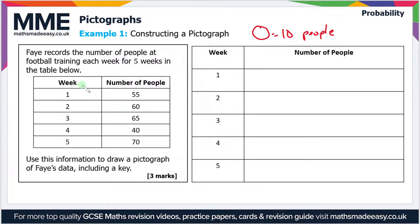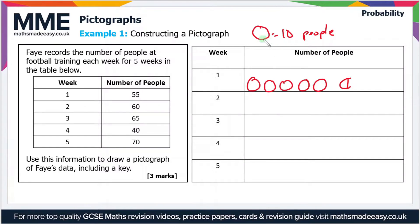I'm using a football because the question is about football training. For week one there are 55 people, so we need five and a half footballs: one, two, three, four, five, and a half. Week two has 60 people, so we need six footballs: one, two, three, four, five, six. Week three has 65, so we need six and a half footballs: one, two, three, four, five, six, and a half.